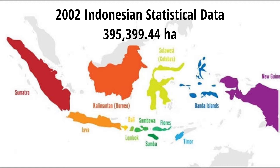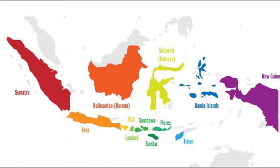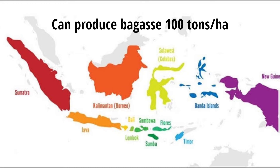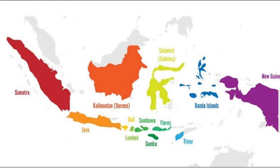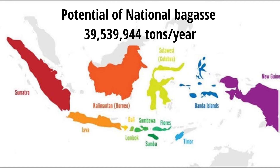...395,399.44 hectares, spread over Sumatra Island, Kalimantan Island, and Sulawesi Island. It is estimated that each hectare of sugarcane can produce 100 tons of bagasse. Therefore, the potential of national bagasse available from the total area of sugarcane reaches 39 million 539,944 tons per year.